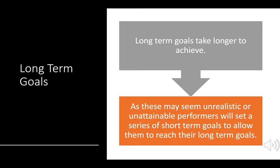The second type of goals are long-term goals. Long-term goals, as the name suggests, take a long time to complete. These are goals which may take up to a season or the end of a training program — they may take a few weeks to achieve and may seem unrealistic or unattainable for performers. So it's important that we set a series of short-term goals to break this big goal into small chunks, which will help them to reach their long-term goal.